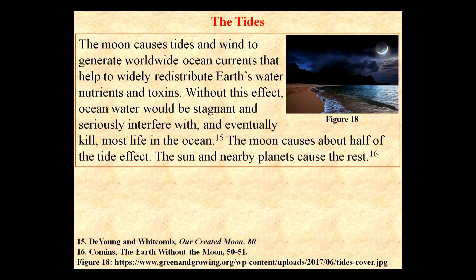The moon causes tides and wind to generate worldwide ocean currents that help to widely redistribute Earth's water, nutrients, and toxins. Without this effect, ocean water would be stagnant and seriously interfere with and eventually kill most life in the ocean. The moon causes about half of the tidal effect. The sun and nearby planets cause the rest.